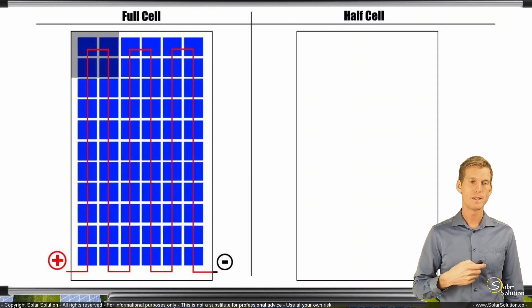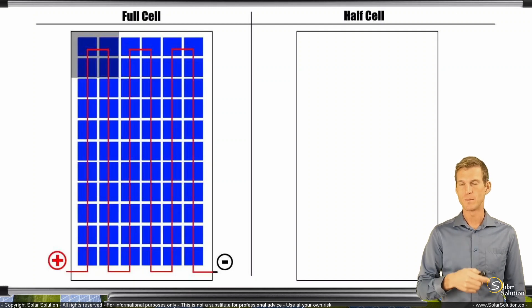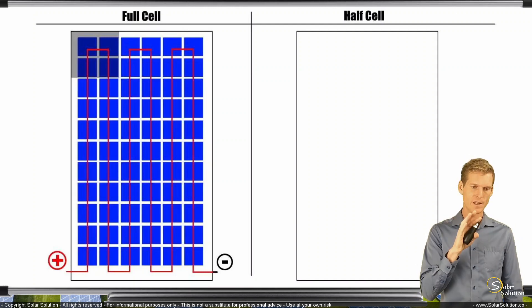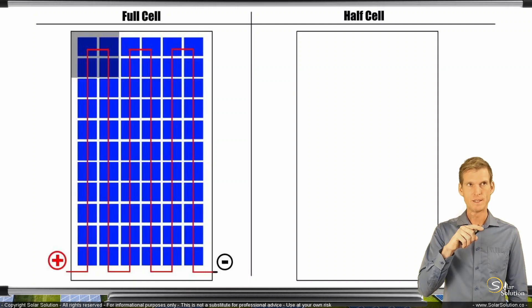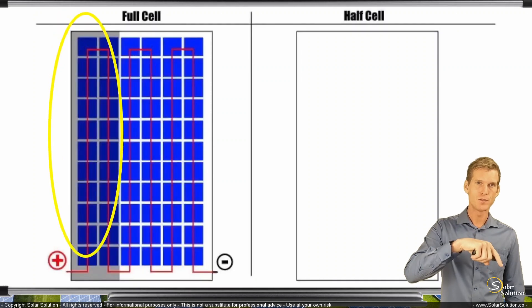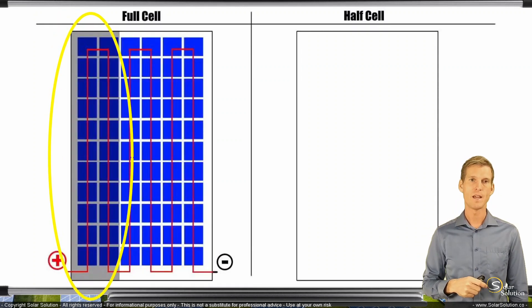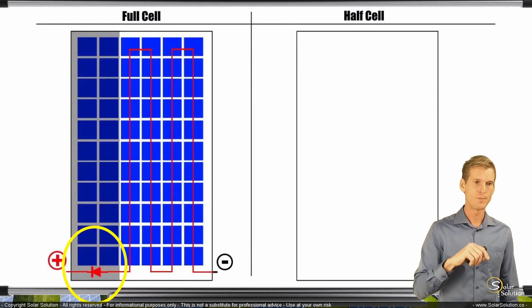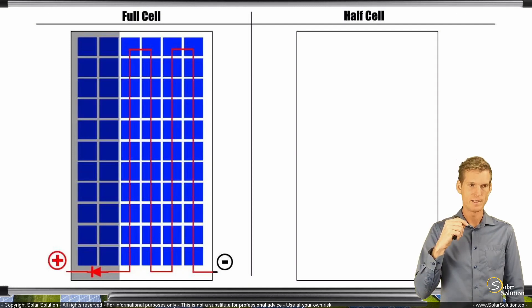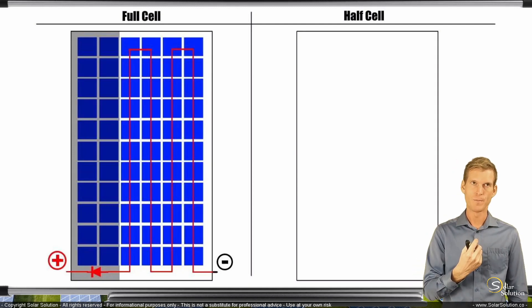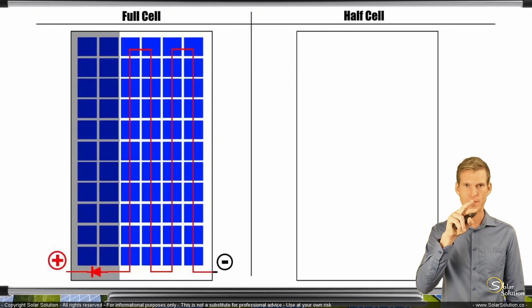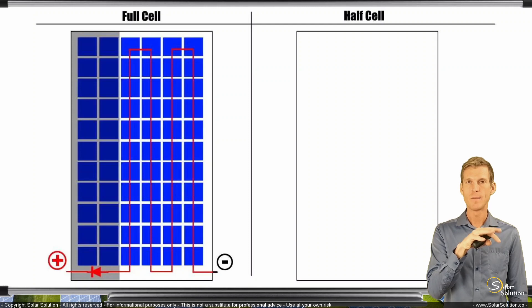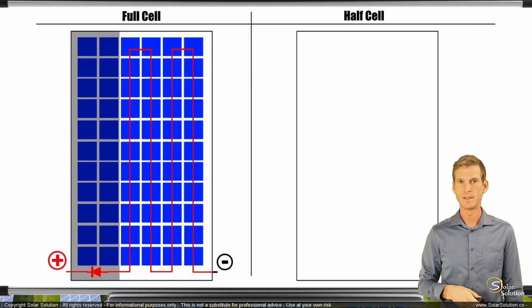So what they've done to kind of mitigate the negative impact from very local shading of a module is that manufacturers have installed bypass diodes. Typically what they do for these kind of modules is that they install one bypass diode for every two columns of solar cells. So they take the first two columns of the solar cells, they install a bypass diode, and then if those first four cells are blocked by a leaf, it's taking the first two rows completely out of operation. So it's accepting that it's losing one-third of the power output of the panel, but the other two-thirds of the panel will be operating at its full performance under the given conditions.